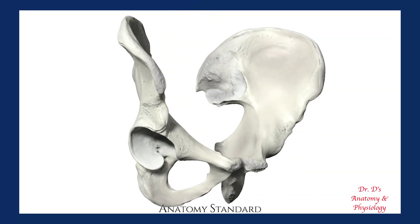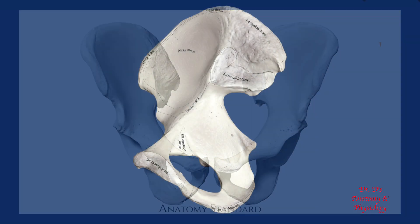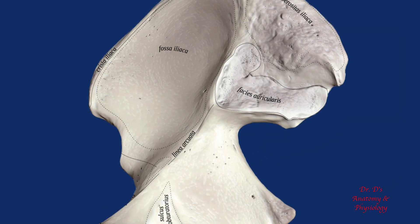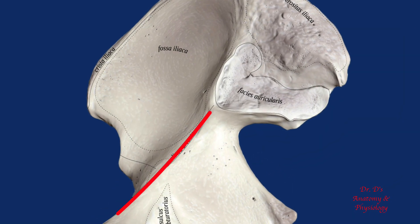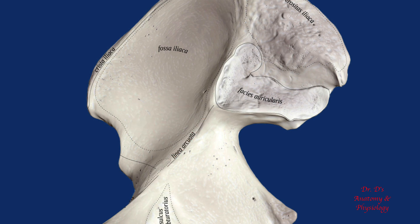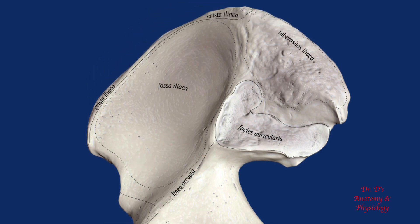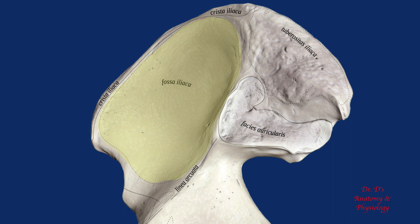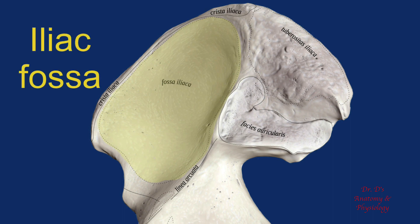Now let's look on the medial side of the bone. There is a line that is part of the pelvic brim called the arcuate line, simply because it arcs or bends. Above the arcuate line, the surface of the bone is smooth and concave. This is a kind of depression in the bone called the iliac fossa. A muscle called iliacus will attach here.